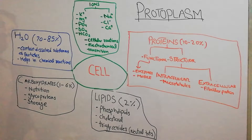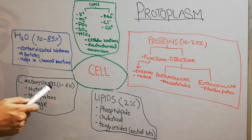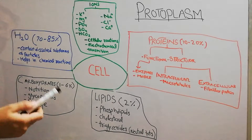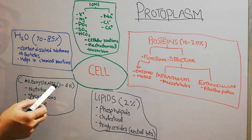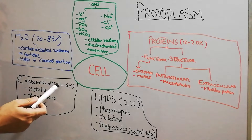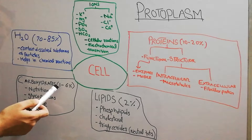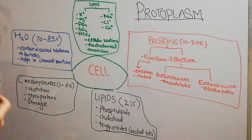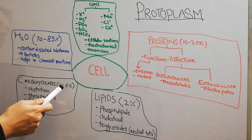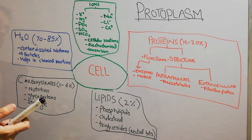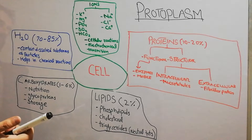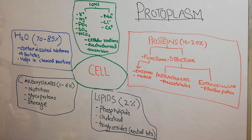After lipids, we have carbohydrates. Carbohydrates are present in cells at about 1% of the cell mass. However, in some cells like muscle cells they make about 3% of the cell, and in liver cells, where carbohydrates are stored, they make about 6% of the cell mass.